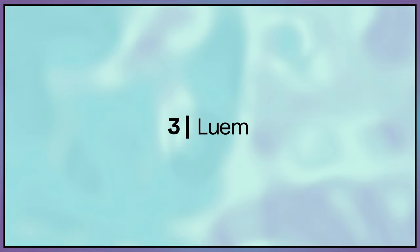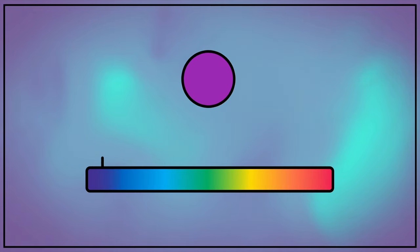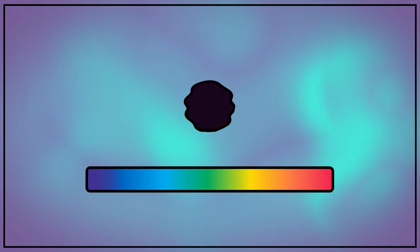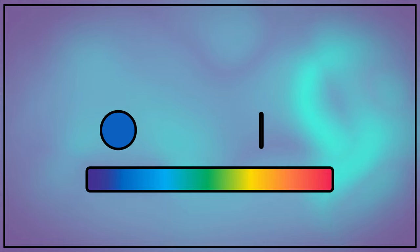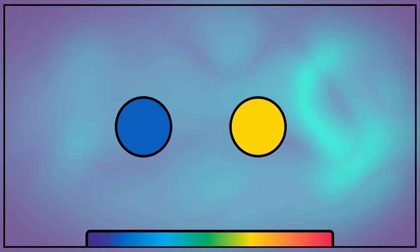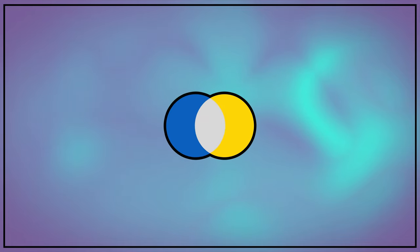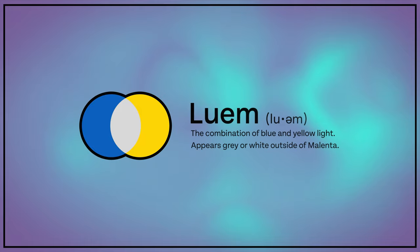Chapter 3. Luam. Luam is a tertiary color with a story not unlike purple. Purple is not represented by a frequency, but instead a combination of two frequencies, red and blue. Similarly, luam is a combination of blue and yellow, creating a hue as distinct from its parent colors as red is to green.